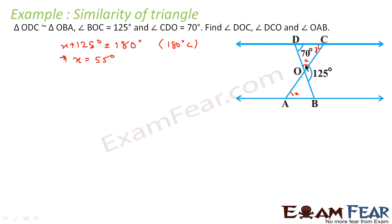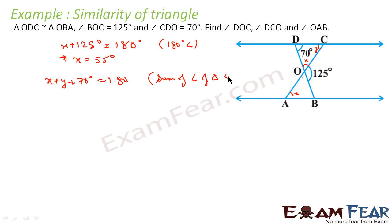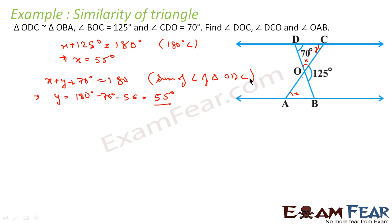Now since X is 55 degrees, we can find Y using the sum of angles in triangle ODC, which is 180 degrees. So X plus Y plus 70 degrees equals 180 degrees. Y is equal to 180 minus 70 minus 55, which comes out to be 55 degrees.